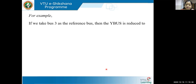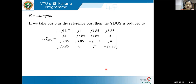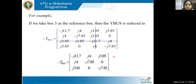For example, if we take bus three as the reference bus, then the Y bus is reduced. This is your original four-by-four Y bus. If bus three is taken as reference, the third column and third row should be eliminated. The Y bus is then reduced to a three-by-three matrix. So the size of Y bus is defined as (N−1) × (N−1), where N is the number of buses — one bus will be considered as the reference bus.